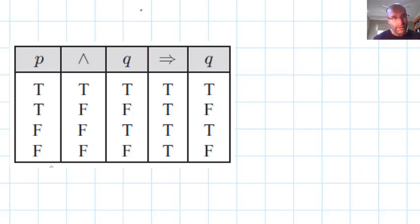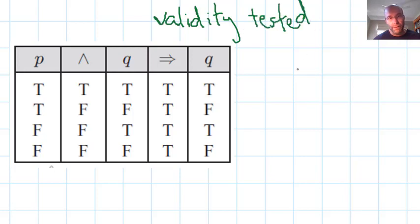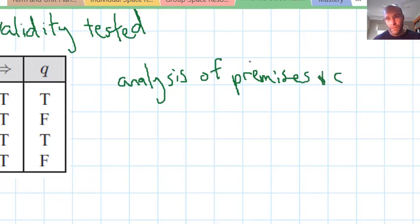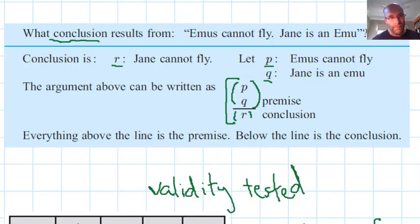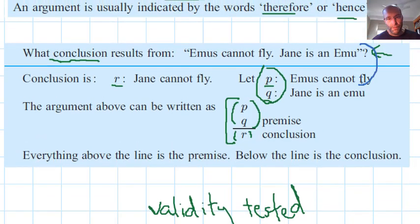Arguments can have their validity tested through analysis of premises and conclusions. We're looking at the validity, testing the validity of arguments. We're not concerned about whether the premises are true or not. We're considering the validity of what can be inferred from them. What valid conclusions can we come to? Is a conclusion valid or invalid?